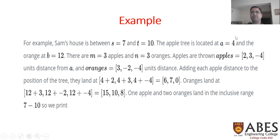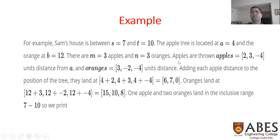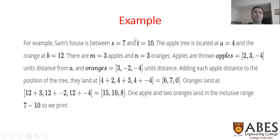The apple tree is at point A equals 4, and the orange tree is at point B equals 12. On the x-axis, Sam's house spans from 7 to 10. There are three apples with distances 2, 3, and minus 4, and three oranges with distances 3, minus 2, and minus 4. We need to count those apples and oranges whose final positions are between 7 and 10.